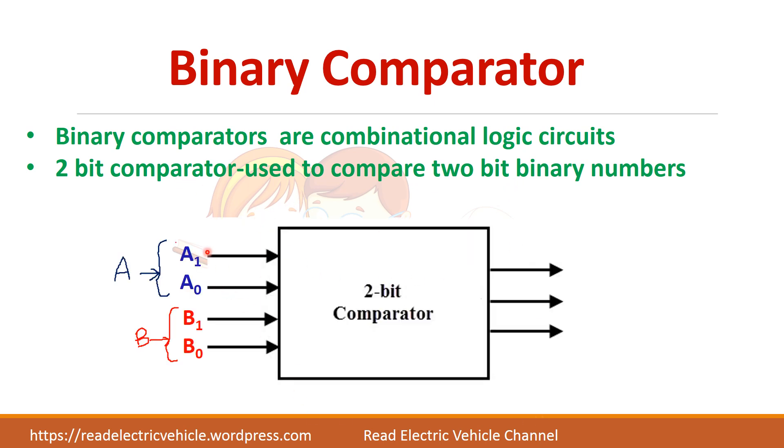We will be seeing about 2-bit comparator, which is used to compare 2-bit binary numbers. You see here, A is a 2-bit number and B is another 2-bit number. So A has 2 bits A1, A0 and B has B1 and B0. So these 2 numbers will be compared.